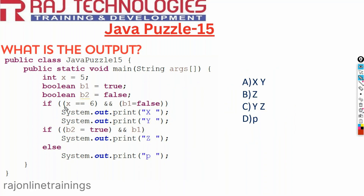Understand carefully. x equal to 6 is false — no worries. But when we use the logical AND operator and the first condition is false, it will not evaluate the remaining conditions at all. This is short-circuit evaluation. So b1 equal to false will not get executed. Since the first condition is false, b1 will still remain true.